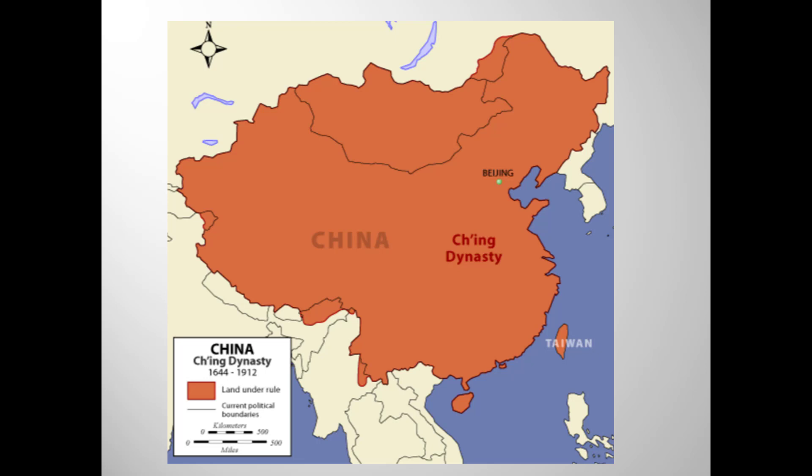To round out our dynasties, I should note that a final dynasty, and another non-Han Chinese dynasty, took power in 1644 and ruled until the fall of the empire in the early 20th century. Beijing's Forbidden City remained the center of imperial power throughout this dynasty, but most of its essential structure was established during the Ming dynasty, so that's where we'll linger.